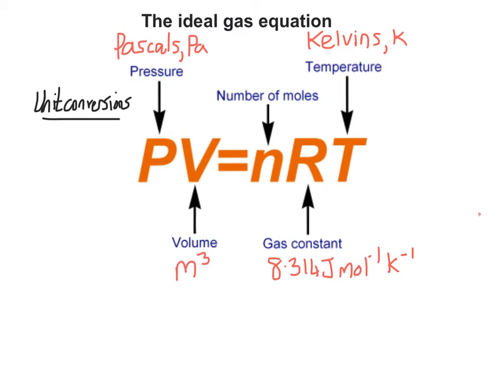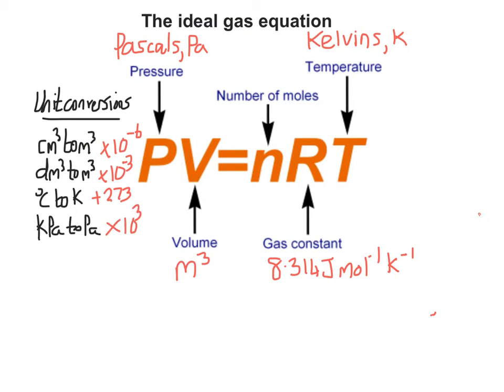Let's look at some unit conversions. To convert centimetres cubed to metres cubed, you multiply times 10 to the minus 6. To convert decimetres cubed to metres cubed, you multiply times 10 to the minus 3, or divide by 1000. To convert degrees Celsius to kelvins, you add 273. And to convert kilopascals to pascals, you multiply by 1000.